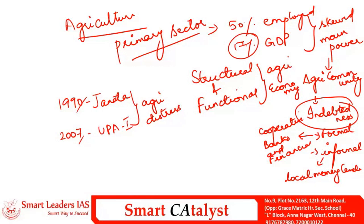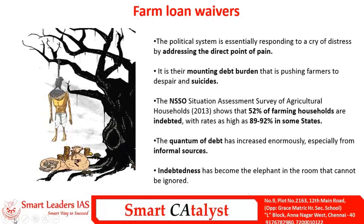Considering the lower contribution of agriculture to the Indian economy, economists have raised questions about whether spending on loan waivers would provide any tangible or sustainable results. There are various factors causing pain to farmers in India, but agri indebtedness is one of the direct points of pain. Governments in different states are trying to address this direct point of pain by providing loan waivers.